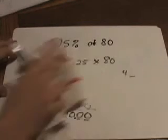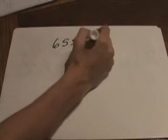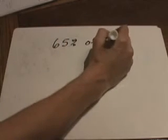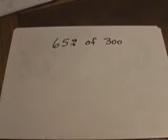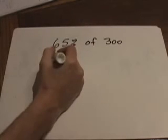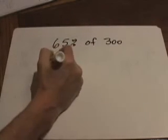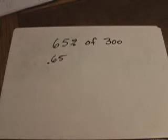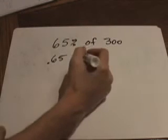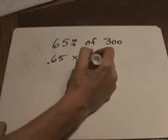All right, let's try one that gets a little bit harder. What if we want to find 65% of 300? How would we do that? Well, again, 65% is the same thing as 0.65, and so we're going to multiply that times 300.